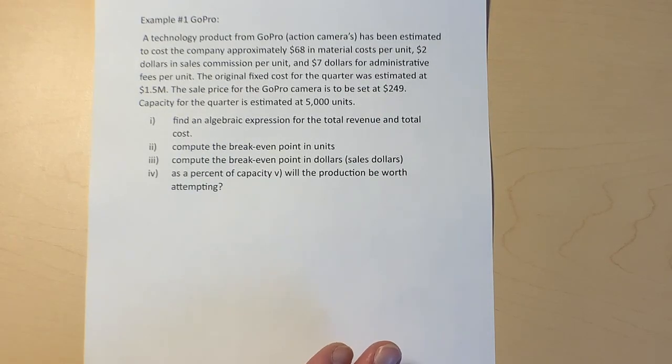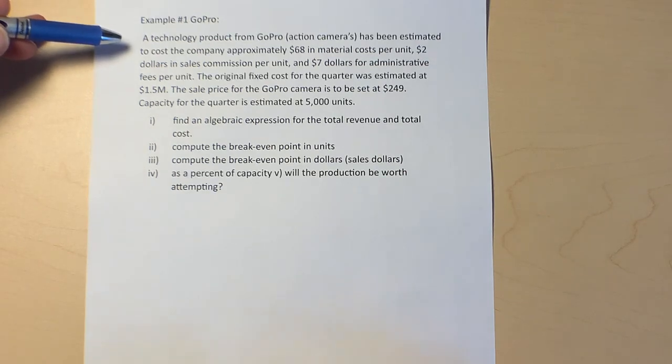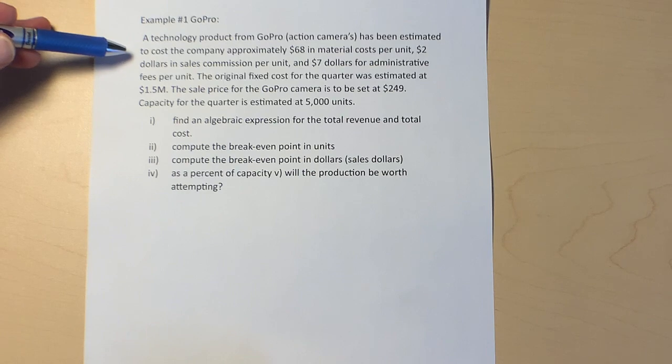All right guys, so here's a great question on break-even. Let's read the question together. A technology product from GoPro action cameras has been estimated to cost the company approximately $68 in material costs per unit, $2 in sales commission per unit, and $7 for administrative fees per unit.